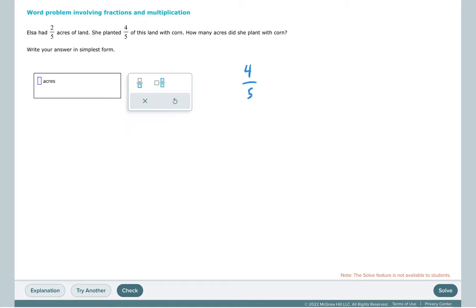So the problem really is four-fifths of the two-fifths acres of land are planted with corn. In this case, the word of here is going to mean multiplication. So we're going to do four times two, five times five. Look for ways we can simplify, but there aren't any. So we have eight over twenty-five.